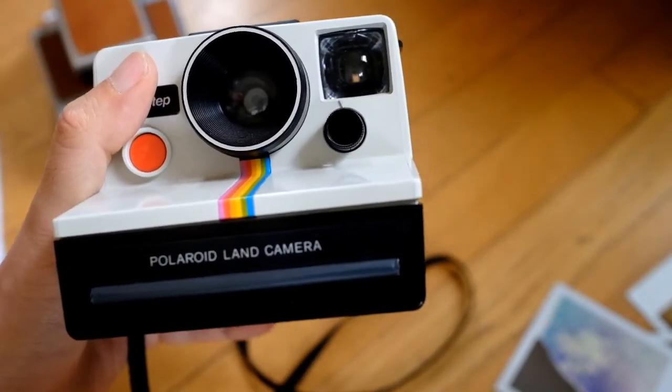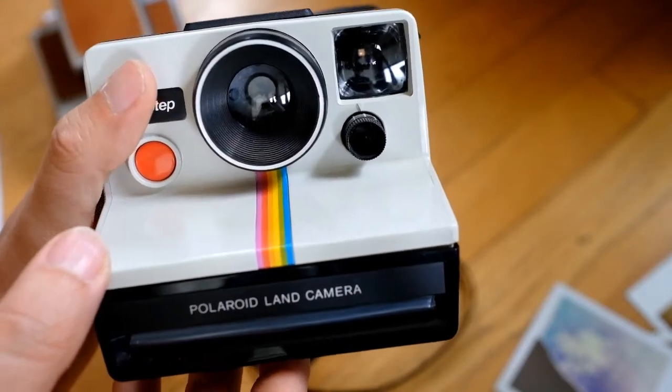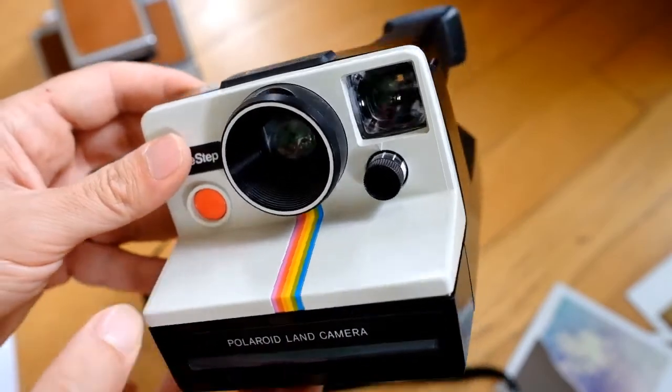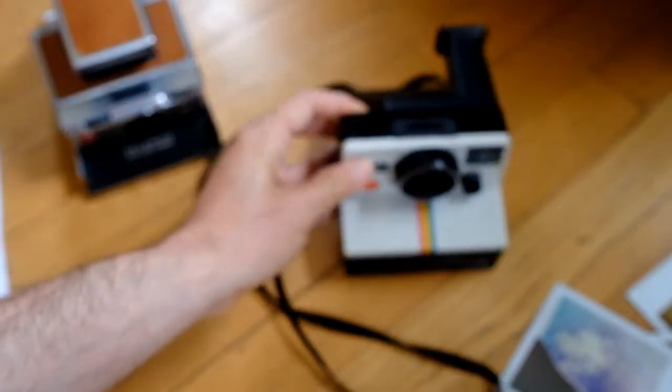Impossible's new i1 camera uses film packs they design themselves, and they still only pack eight shots in them. So, is this really a technical problem? Or is this just Impossible being stingy with what we get out of their $25 packs of film?